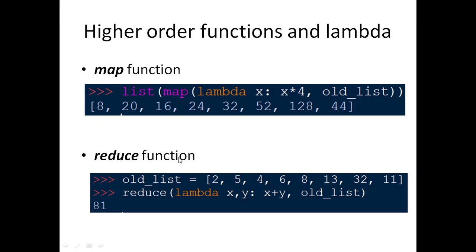We also have the reduce function, another higher order function. It takes a lambda function as one argument and a list as the second. Using lambda x, y: x + y with the old list, it sums up all values in the list. The result is 81, which is 2 + 5 + 4 + 6 + 8 + 13 + 32 + 11. The reduce function is a higher order function because it takes a function as one of its arguments. Lambda functions are mainly used in association with higher order functions.